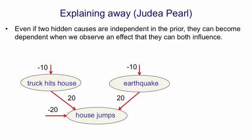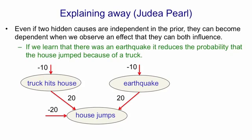However, if you assume both hidden causes, that has a probability of e to the minus 20. So that's extremely unlikely, even if the house did jump. So assuming there was an earthquake reduces the probability that the house jumped because a truck hit it. And we get an anti-correlation between the two hidden causes when we've observed the house jumping.